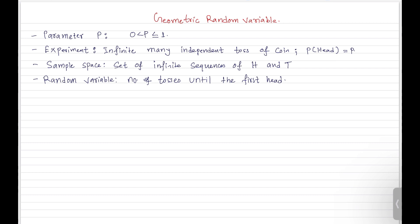Now if you have understood this experiment, what will be the sample space? We are tossing a coin infinite many times and all these tosses are independent. Maybe you will get a head on the first toss — that could be one case. Or maybe you will not get the head on the first toss but get the head on the second toss. Maybe the first toss gives tail, second gives tail, and the third gives head. Or tail, tail, tail, and head on the fourth toss. So the sample space will have infinite such elements.